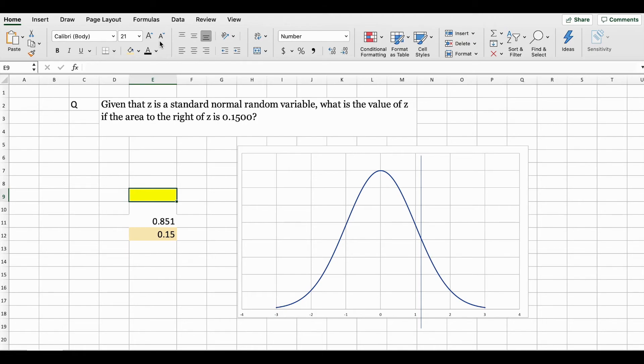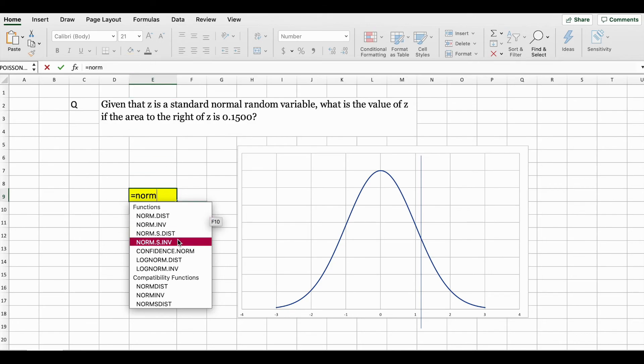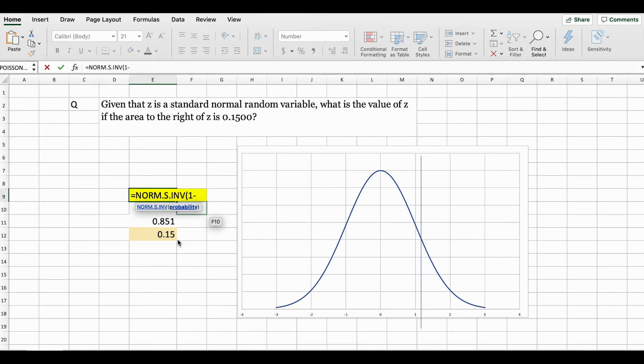Another way to get to this answer quicker is since the question told you that the right side of the area is equal to 0.1500, when you were putting in your formula, the NORM.S.INVERSE, if you do 1 minus 0.1500, you will get the answer 1.04.